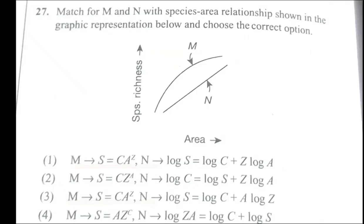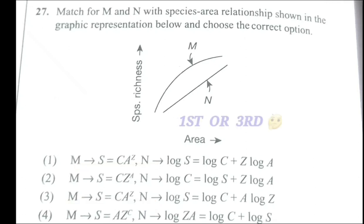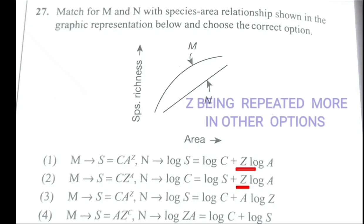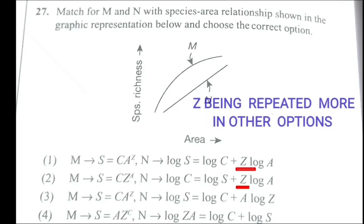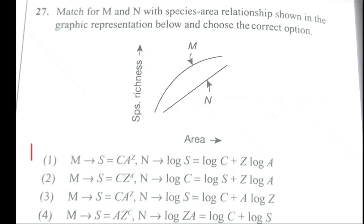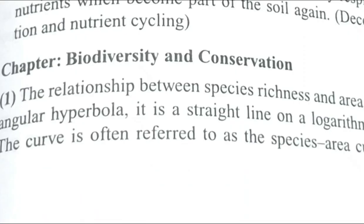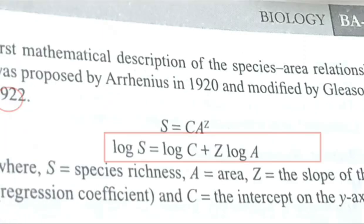In this question, the correct answer will be among the first option or third option because both have a similar start. To decide the correct answer, we take the help of other options. Among A and Z, A is being repeated more, so the answer will automatically turn out to be the first option. If you're solving without tricks, imagine how much you have to do — you can verify your answer here.